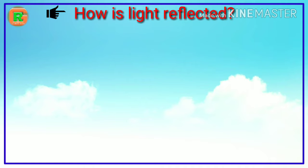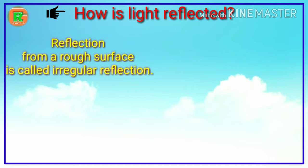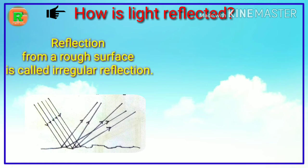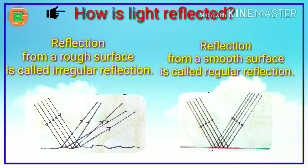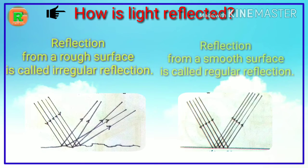How is light reflected according to the surface of reflection? Reflection from a rough surface is irregular so it is called irregular reflection. Reflection from a smooth surface is regular so it is called regular reflection.